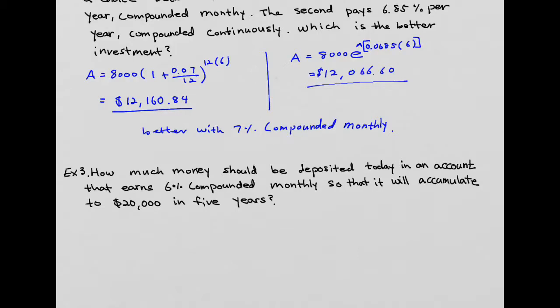Example three is the same type of problem, but this time instead of trying to find the amount, we're going to find the principal. How much money should be deposited today in an account that earns 6% compounded monthly so that it will accumulate to $20,000 in five years? We're trying to look for how much money should be deposited, which is going to be the principal.